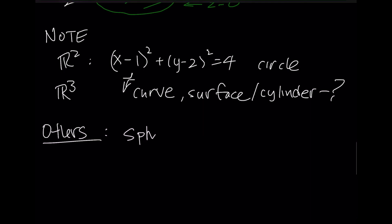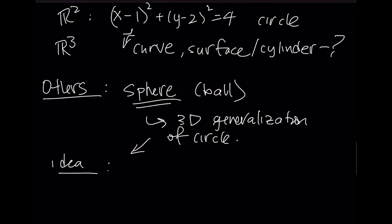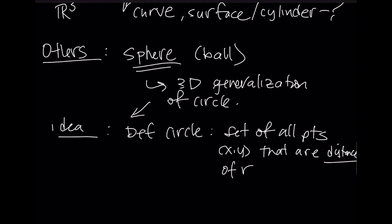You can talk about something called a sphere, which in your mind you should think of as a ball. And this is just another 3D generalization of a circle. And to talk about a sphere, you need one important idea. Remember that the definition of a circle is that it's the set of all points x and y that are a distance, and that's important here, of R from this center, let's say h and k.